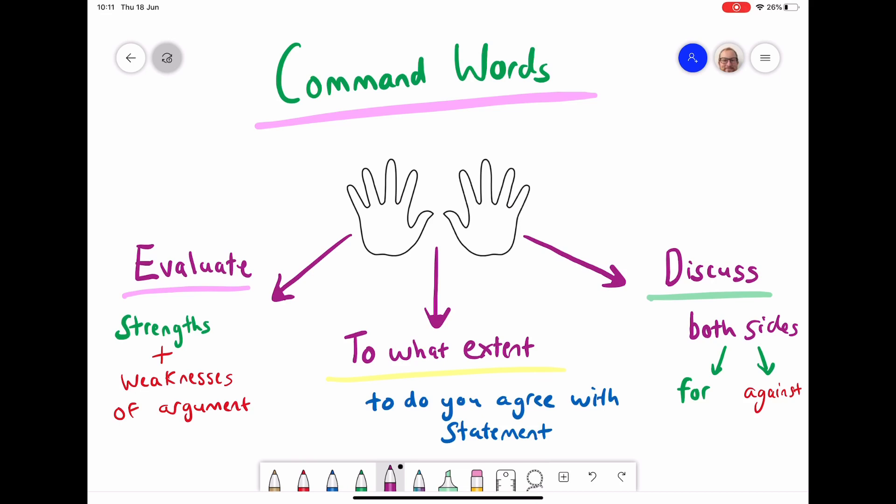So when we come and talk about evaluate, you could say on one hand there are these strengths that support this argument. On the other hand, there are these weaknesses that are going against this. To what extent? On one hand, I do agree with this statement. On the other hand, I don't agree. Discuss is the simplest of the thing.